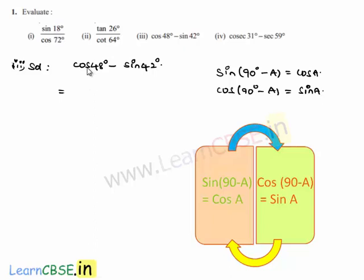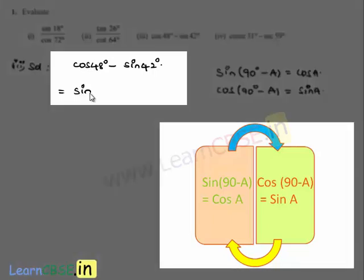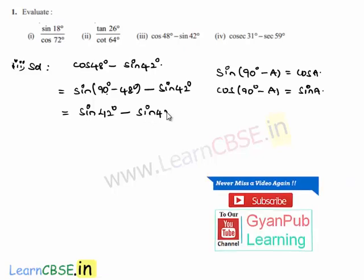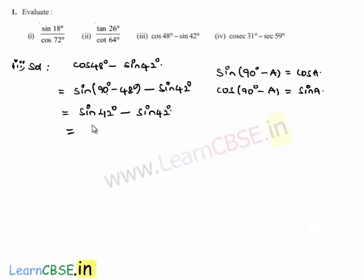Let us convert cos 48 degrees into sin: that will be sin of 90 degrees minus 48 degrees, minus sin 42 degrees. This equals sin 42 degrees minus sin 42 degrees, which is nothing but 0. That is the solution.